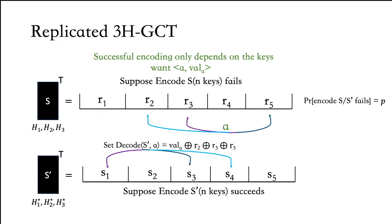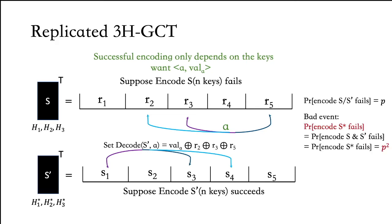When we decode key a in this replicated garbled cuckoo table, we XOR both values to get the expected value of a. Each individual OKVS s and s' fails with probability p. The only time this replicated architecture will be unable to encode n keys is when both s and s' fail — these are independent events, so the probability that encoding fails is p².